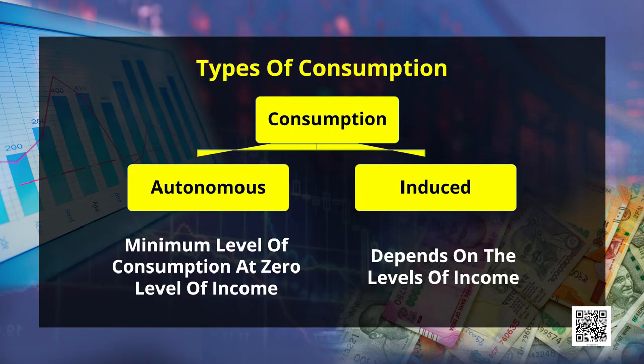Let's say the autonomous consumption level is 100. When you start earning something, your consumption expenditures will always increase, and hence the consumption curve will rise — showing a direct relationship between consumption and national income. When the economy's national income increases, consumption also increases. This increased consumption is known as induced consumption. So consumption is divided into two parts: autonomous consumption, which is the level of consumption at zero income, and induced consumption, which is dependent upon the income level.